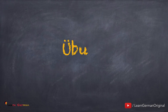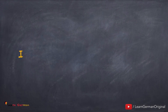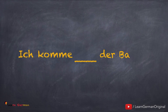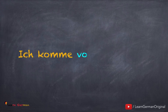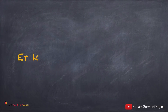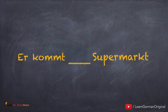Now let's do a small exercise. You have to fill in the blank with VON or VOM. The correct answer to the first one is 'Ich komme von der Bank.' And the answer to the second one should be 'Er kommt vom Supermarkt.'